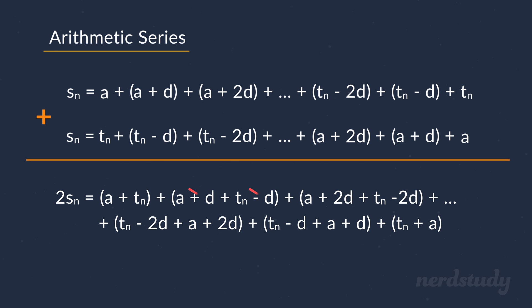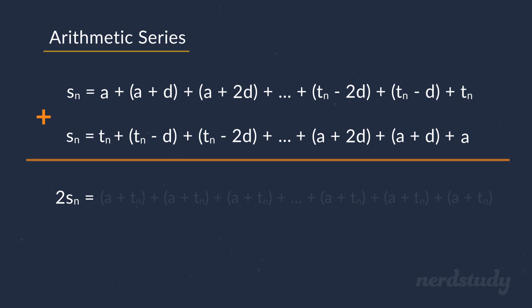Now, if we simplify this, every term with d in it is conveniently subtracted by itself, which ends up making the formula look like this. So, it seems that we've ended up with a formula that is just the addition of a plus t_n over and over again.